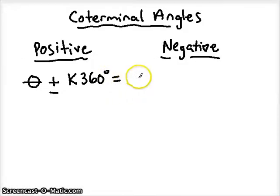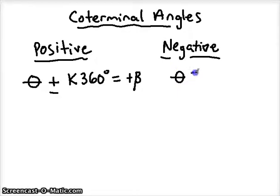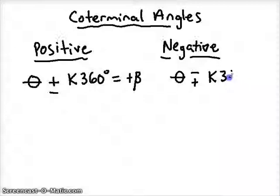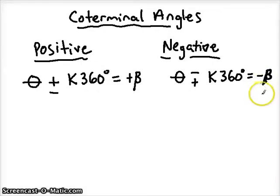Either way you do it, you must end up with a positive angle measurement in order for it to be a positive coterminal angle. Similarly, to get a negative coterminal, we're either going to subtract or add a multiple of 360 degrees. In most cases you'll add for positive and subtract for negative, but not always. We must end up with a negative value if we want it to be a negative coterminal.